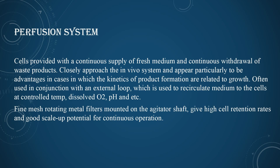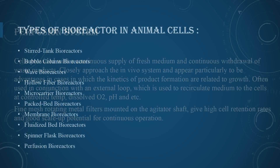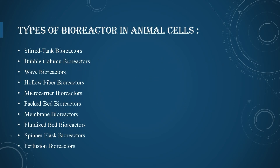The perfusion system provides cells with a continuous supply of fresh medium and continuous withdrawal of waste products, closely approaching an in vivo system. This is particularly advantageous in cases where the kinetics of product formation are linked to growth. There are ten types of bioreactors used for animal cells.